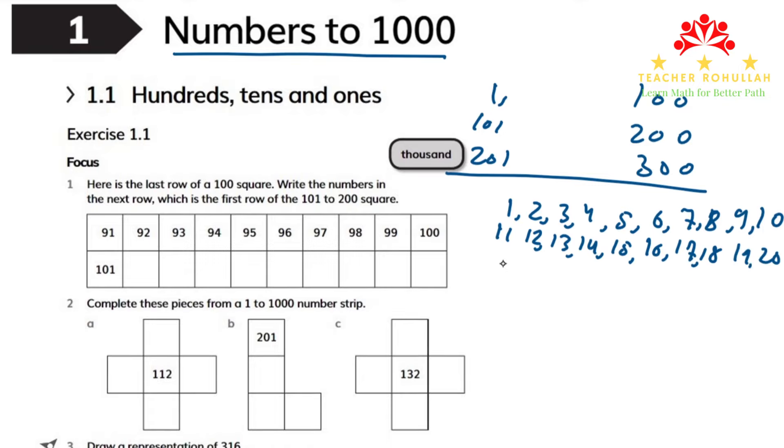If we continue, the last row is 991, 992, up to 1000. In this case, between the first row and the second row, there is a difference of 10.